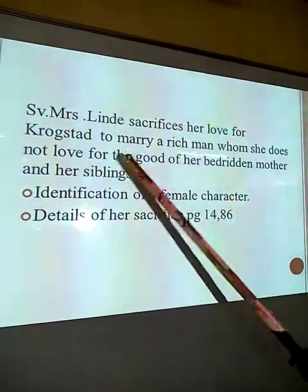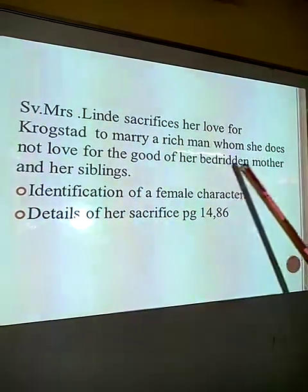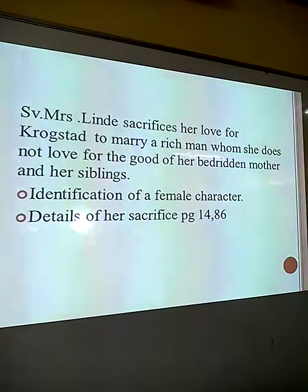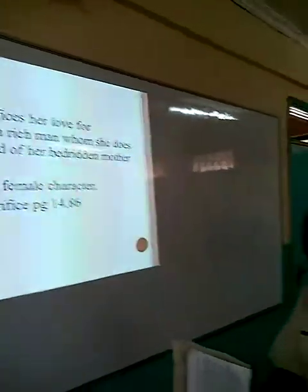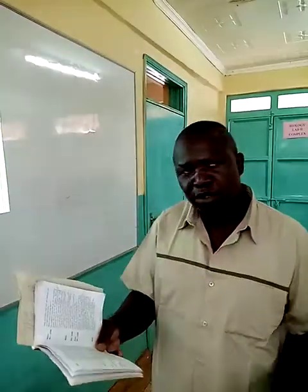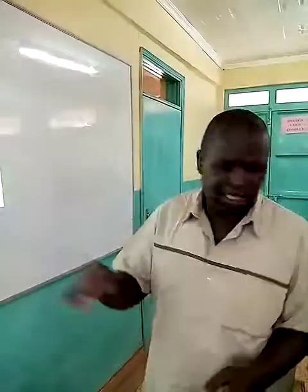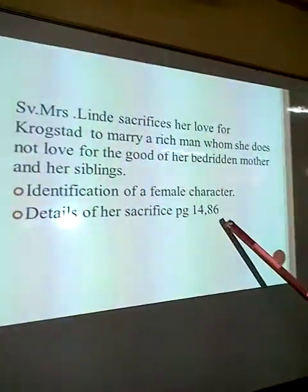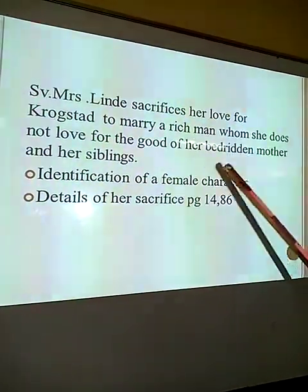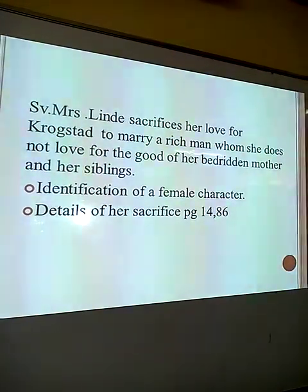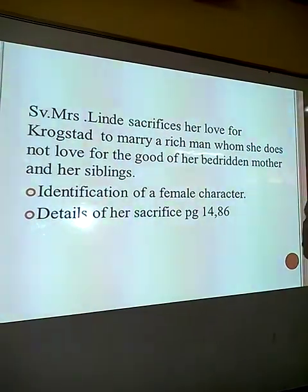Alternatively, for the fifth point: 'Mrs. Linde sacrifices love by marrying a rich man whom she does not love for the good of her bedridden mother and siblings.' The character is already there — Mrs. Linde. Check page 14: Nora asks, 'Why did you marry him then?' Mrs. Linde says: 'My mother was alive then, and was bedridden and helpless, and I had to provide for my two younger brothers. So I did not think I was justified in refusing his offer.' Mrs. Linde tells us she did it not out of love for the man, but because she had a bedridden mother and two younger brothers to take care of.